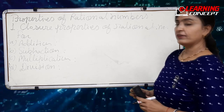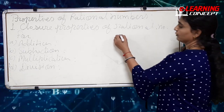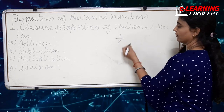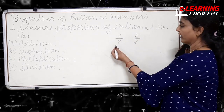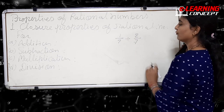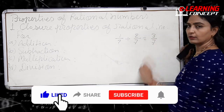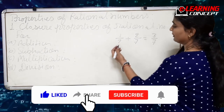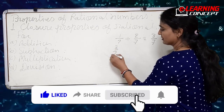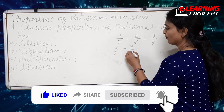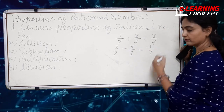Let's understand with the help of examples. If we take two rational numbers like one by seven and two by seven, and we add them, we get a rational number. Again, if we take three by seven minus four by seven, the result is minus one by seven, which is also a rational number.